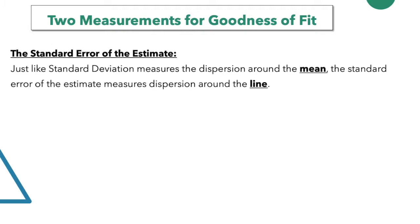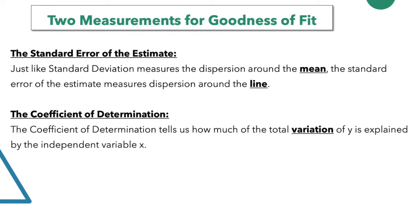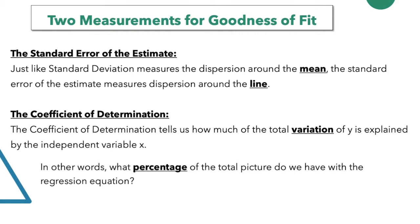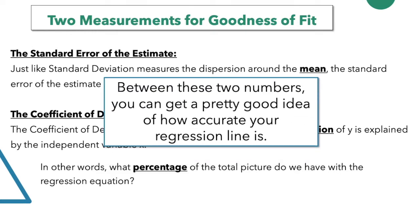The standard error of the estimate: just like standard deviation measures the dispersion around the mean, the standard error of the estimate measures dispersion around the line. And the coefficient of determination — this is one of my favorites. It tells us how much of the total variation of y is explained by the independent variable x. In other words, what percentage of the total picture do we have with this regression equation? So between these two numbers, you can get a pretty good idea of how accurate your regression line is.